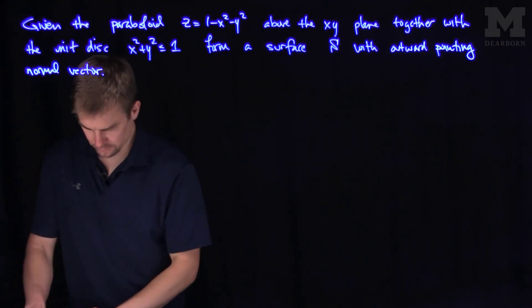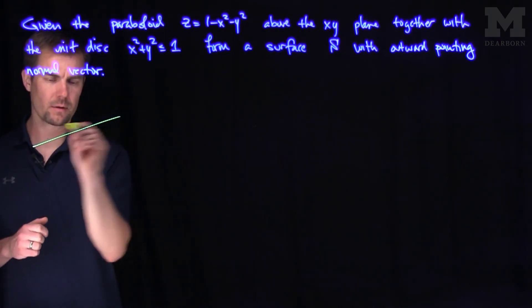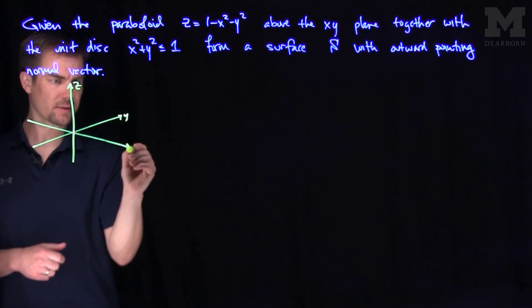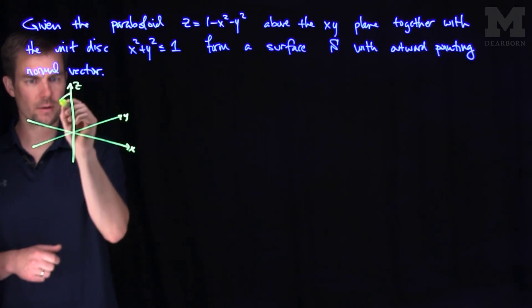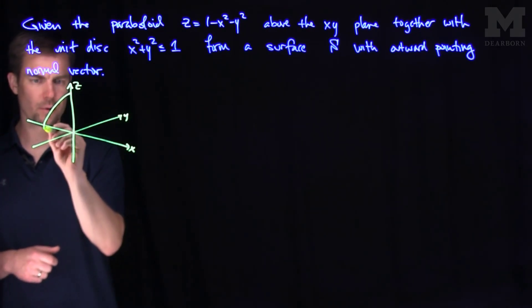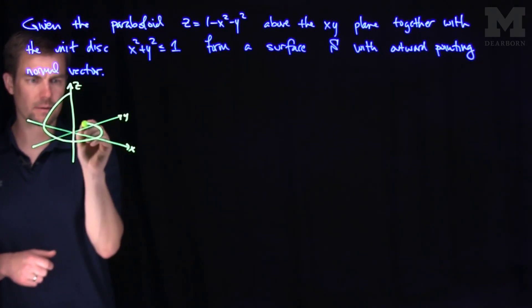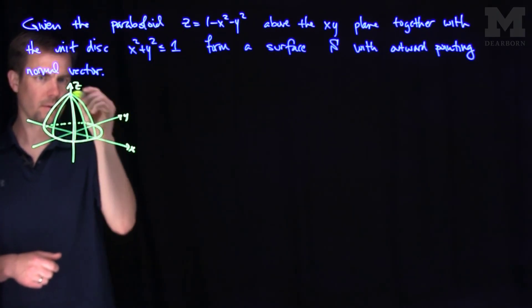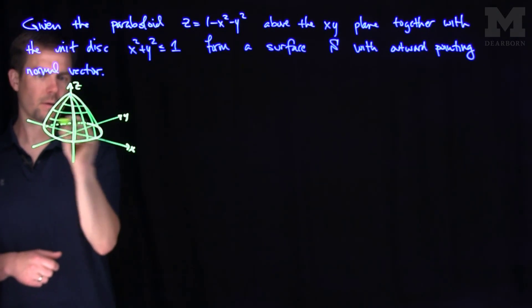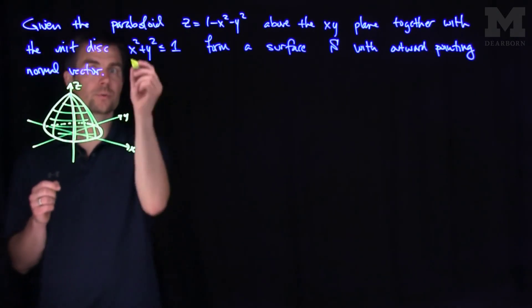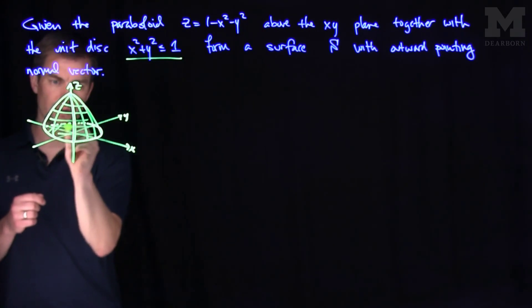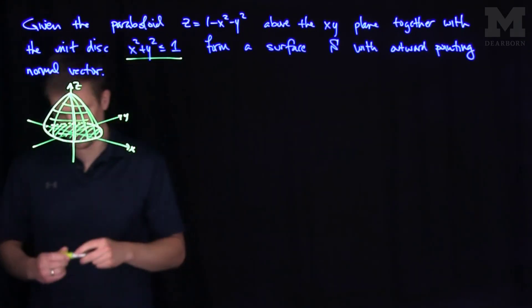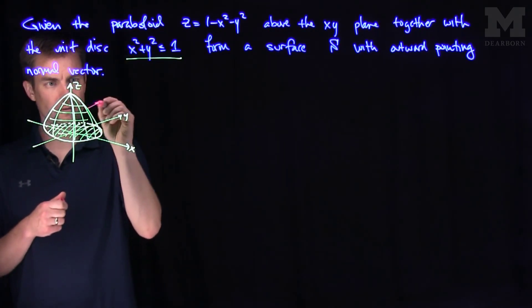So here's our situation. There's the z-axis, the y-axis, and the x-axis. We're given this paraboloid, and this paraboloid intersects the xy plane at the unit disk. There's our paraboloid, and we also adjoin it at the unit disk — putting in this circle on the bottom — and at every point on this surface we're having an outward-pointing normal vector.